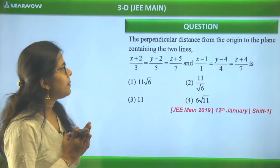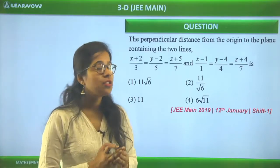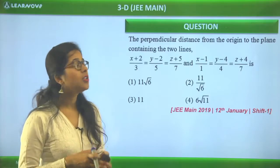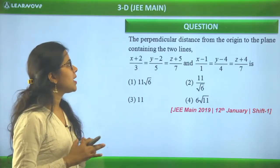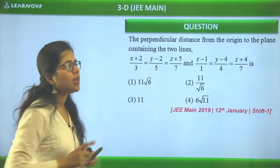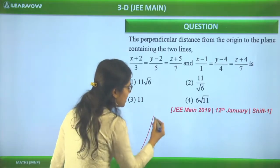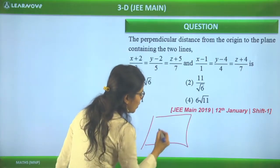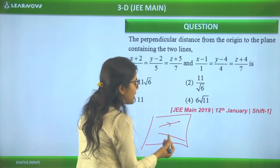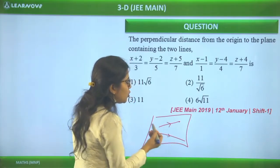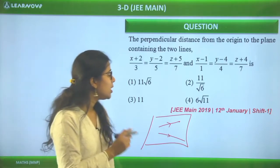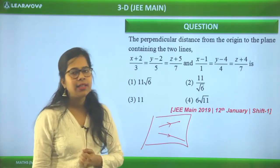The question: Find the perpendicular distance from the origin to the plane containing two given lines. First we need to find the plane equation — the plane that contains both lines. On this plane we have two direction vectors and at least one point.